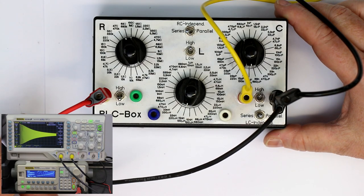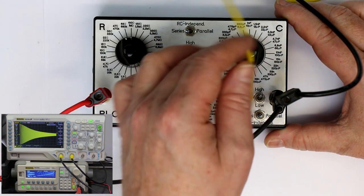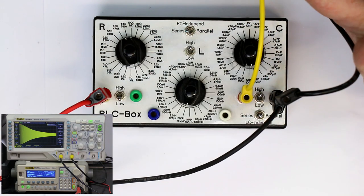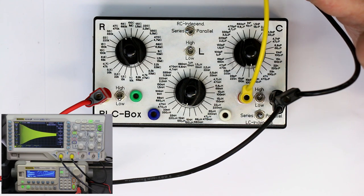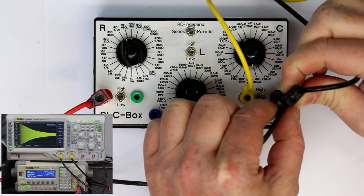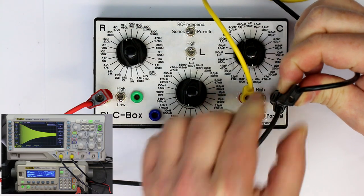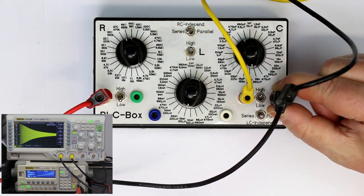By the way, the red lead here is coming from the frequency generator—that is the input—and the yellow one is the output going to the oscilloscope. The two black ones are the common connection, usually connected to ground.